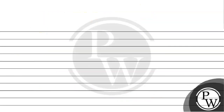The key concept for this question is the relation between azimuthal quantum number and magnetic quantum number. The azimuthal quantum number is represented by l, and it basically gives the shape of the orbital. The azimuthal quantum number value ranges from 0 to n minus 1.